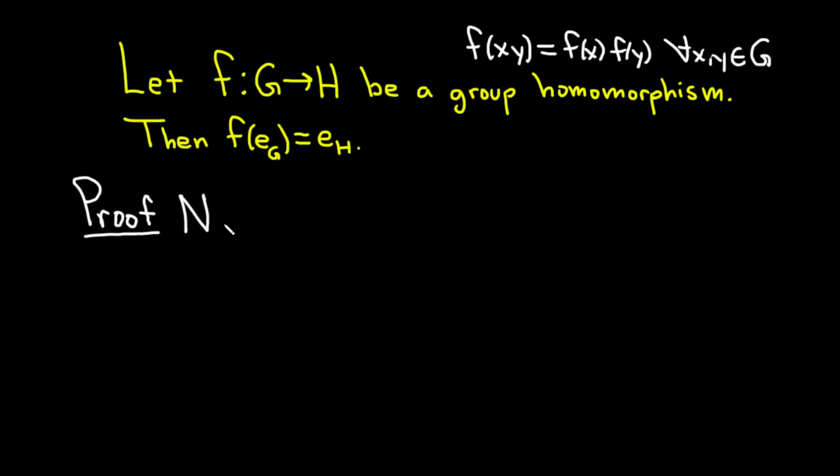Note, we're going to do a little trick here. f applied to the identity element in G, f(e_G), is actually equal to—we want to write this in a way that's going to allow us to use this property. So how can we take one element and turn it into two? Because here we have x times y and here we just have one thing. Well, it's the identity so it's special. So you can write this as e_G times e_G.